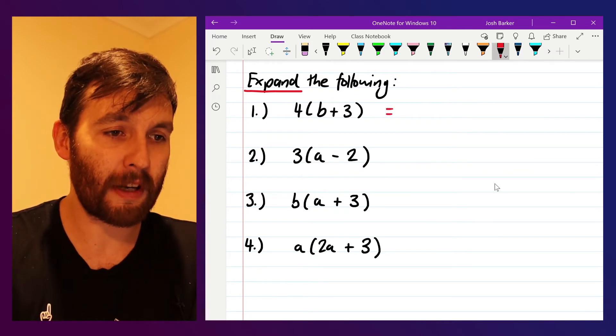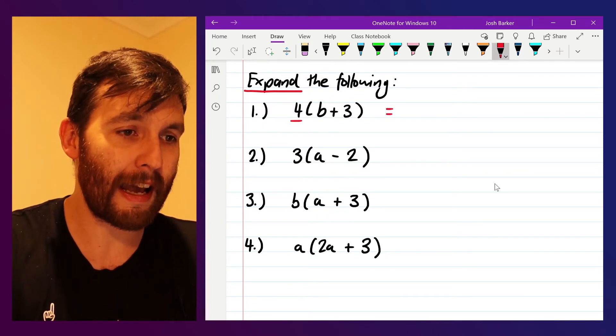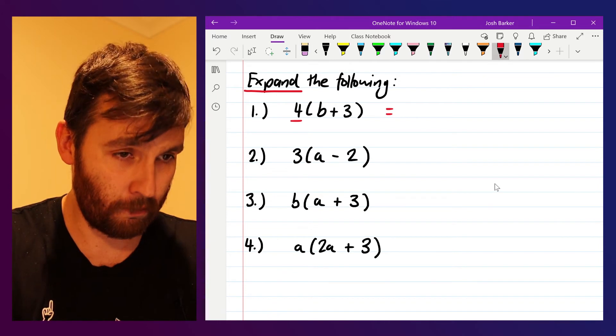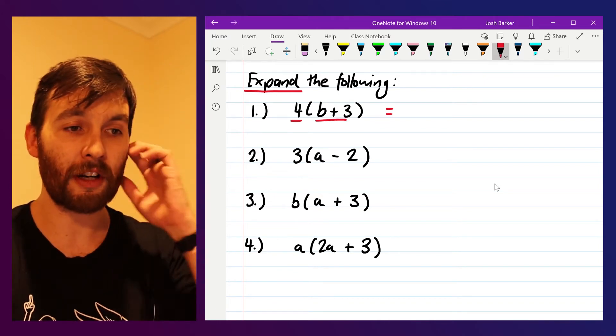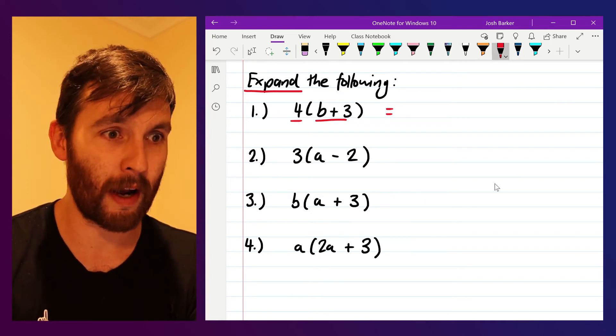So what we do for this first one here, we've got four on the outside of the bracket, and on the inside we've got b plus three. So we've got to come up with an equivalent expression that takes that bracket away.